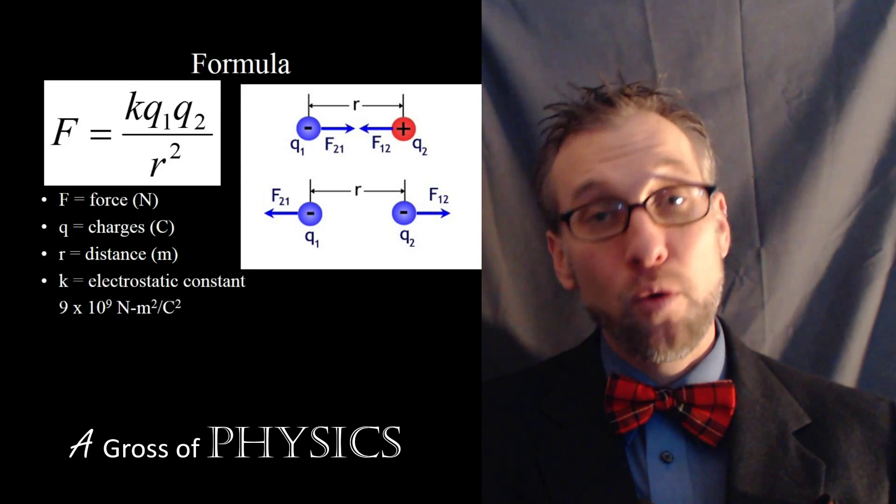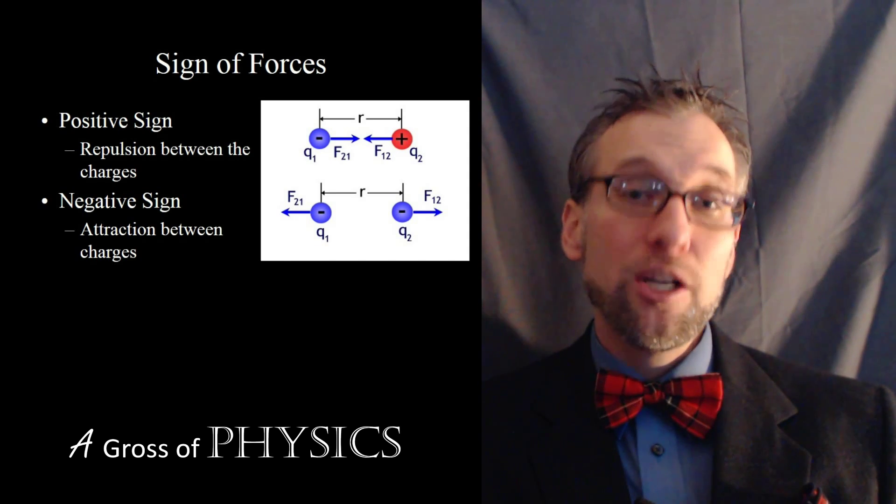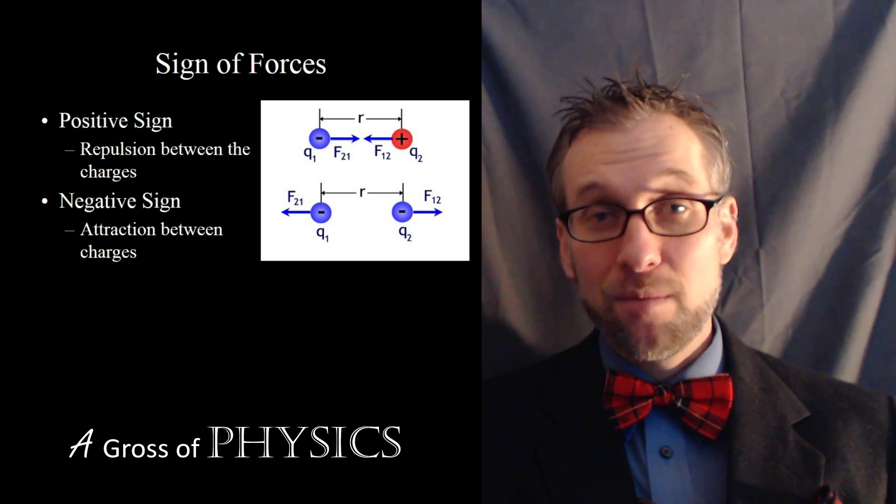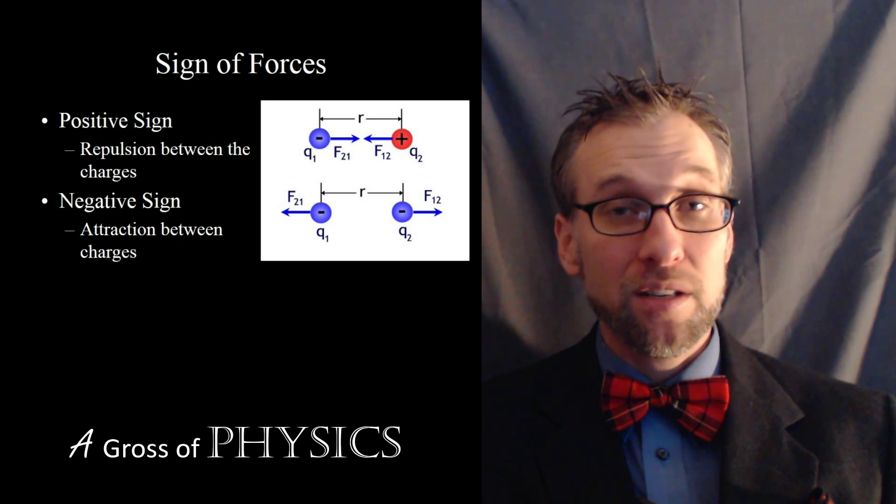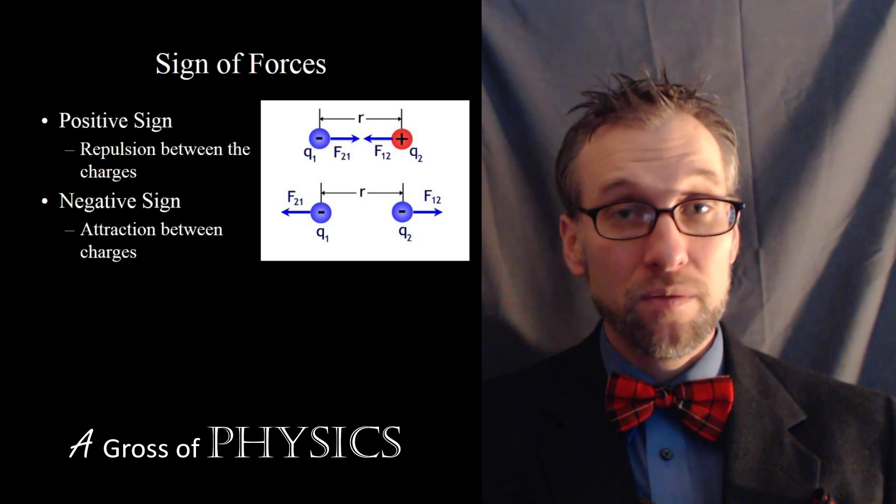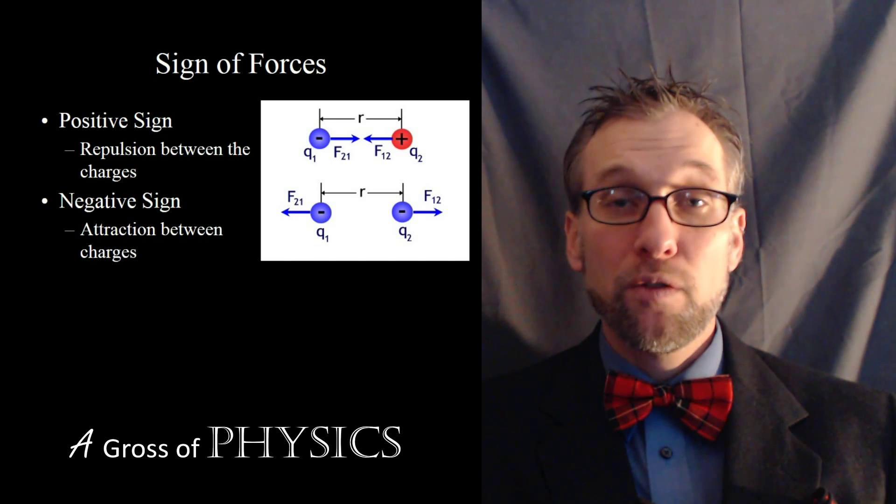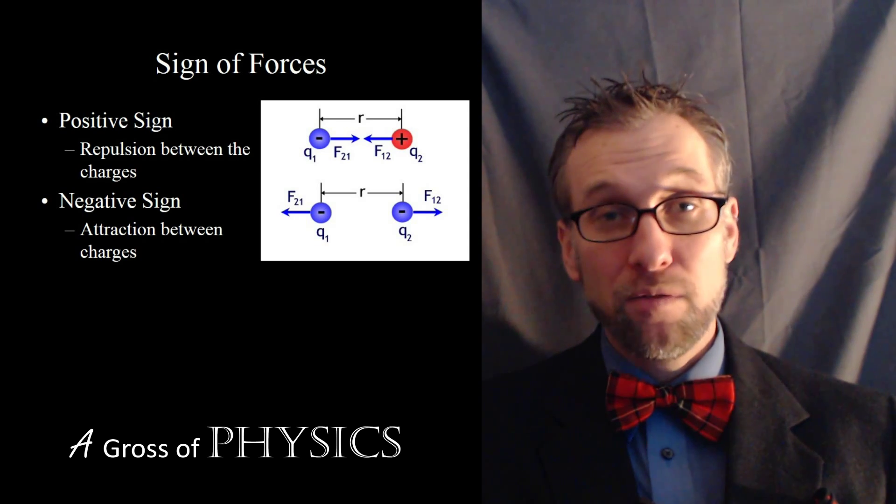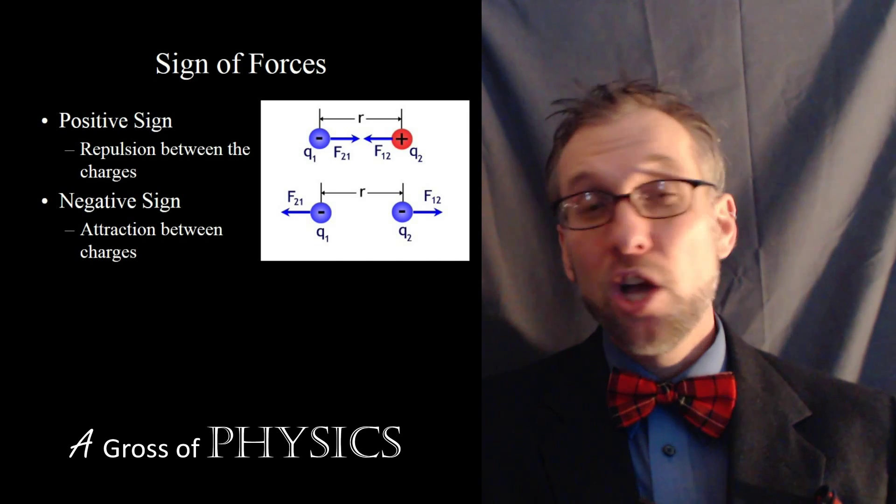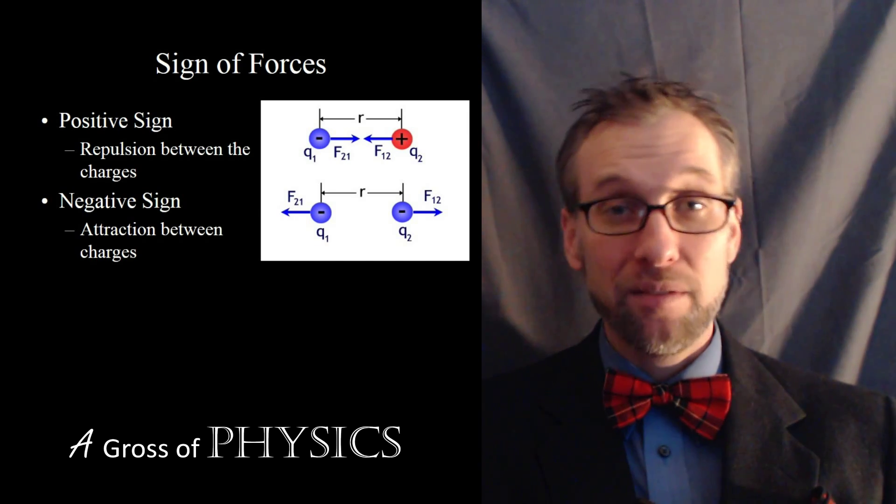Now, unlike gravitational forces, which are always attractive, electrostatic forces can be attractive or repulsive. If we have two like charges and we multiply the Q, that's going to result in a positive answer. If we have two negatives, that becomes positive. Two positives, that's also positive. So if your electrostatic force is a positive result, that means your forces are repulsive. If you multiply a positive and negative value together, you're always going to get a negative. So if you have a negative answer for your force, it's always going to be an attractive force. Depending upon the sign of the electrostatic force, you can determine if it's attractive or repulsive. It's not always attractive like gravity.